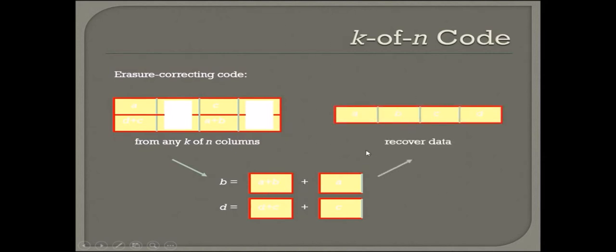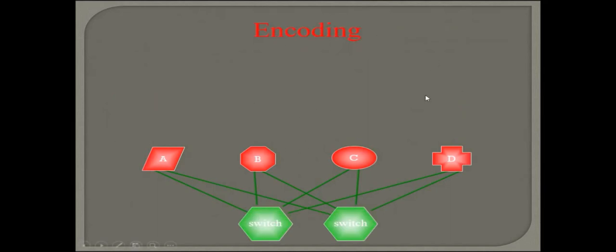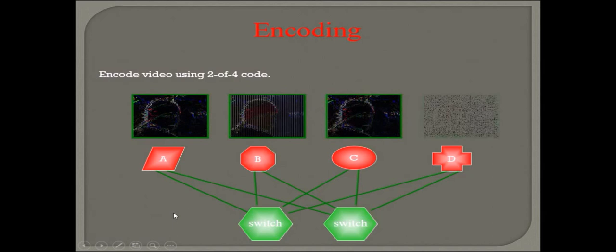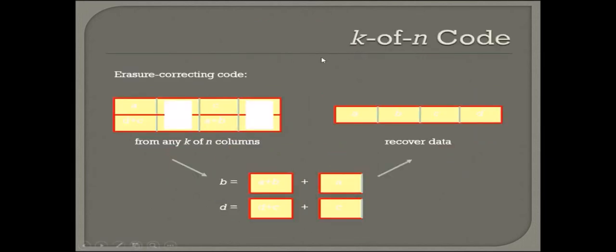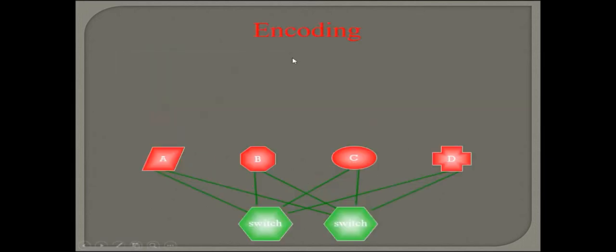What we have to do is create the data from the available nodes. We have recovered the data. The basic idea is to correct the code from any k of n columns. You will be more sure if you see this version. Encode video using two of four code, like a k of n code.